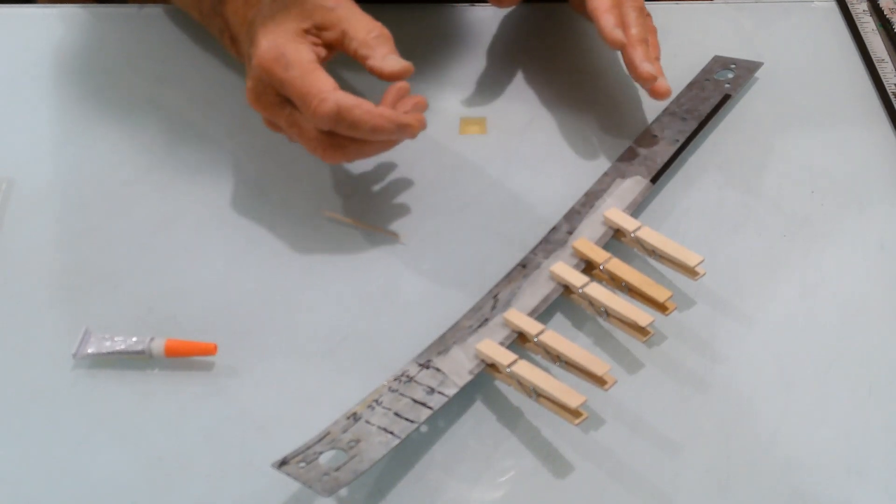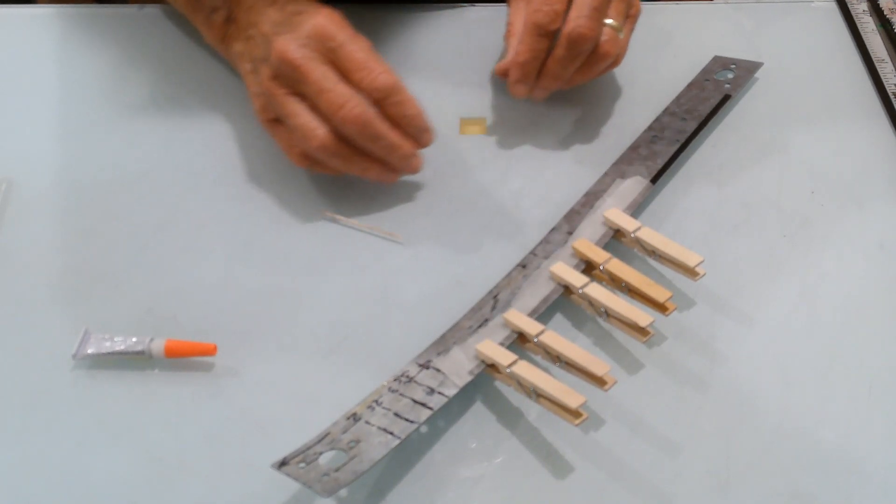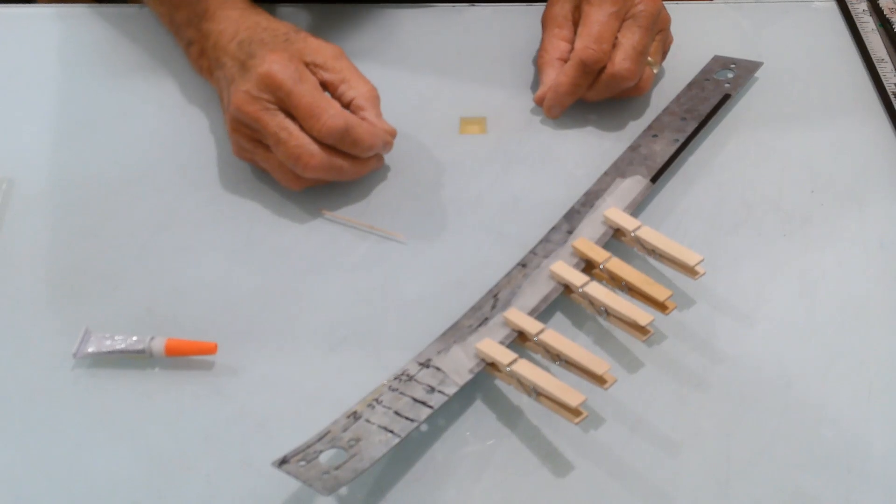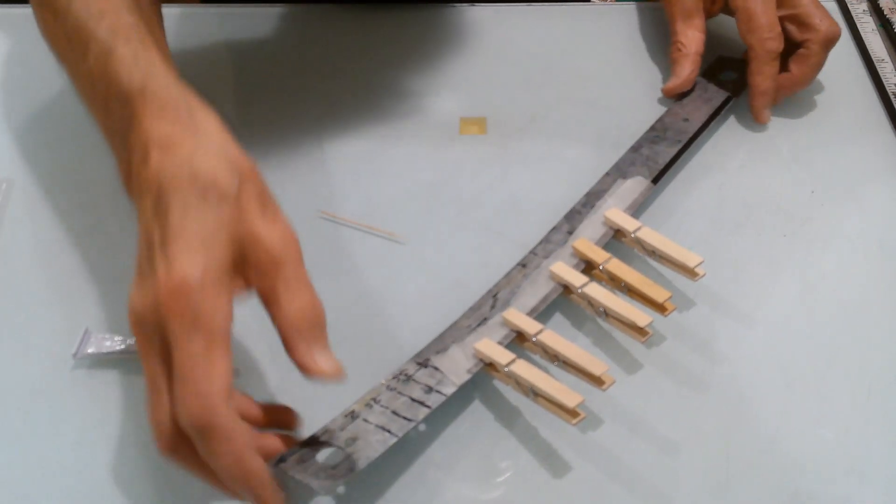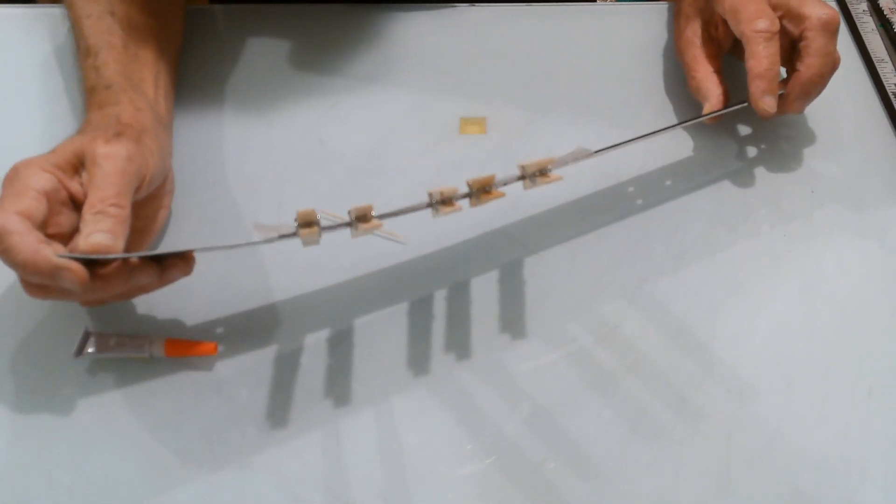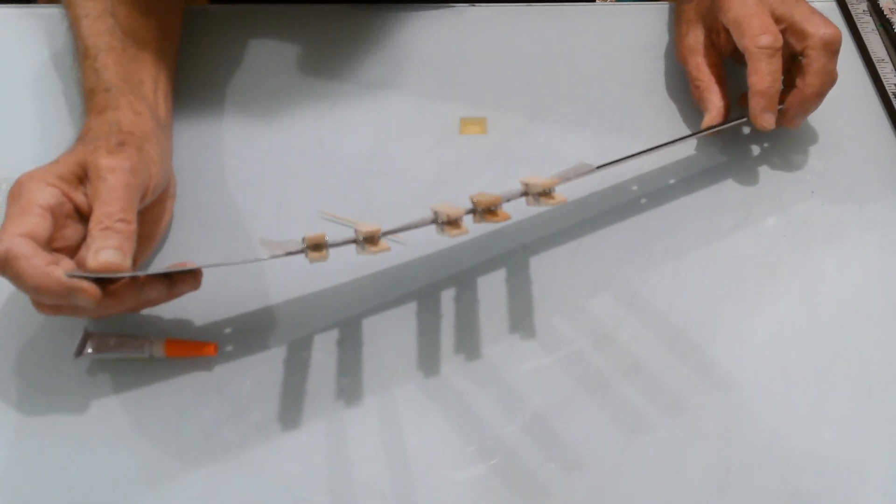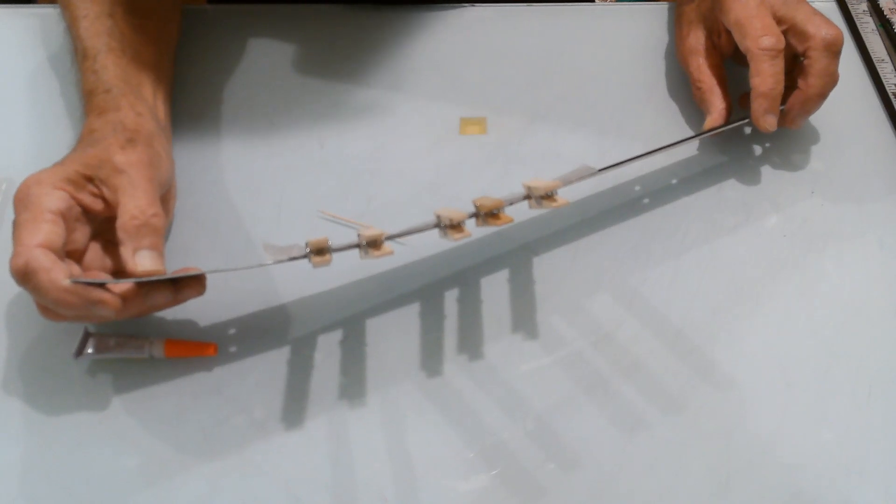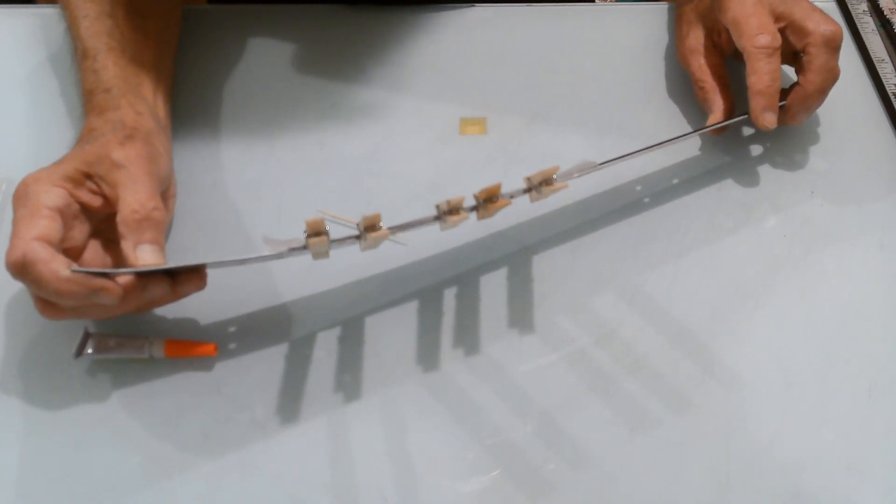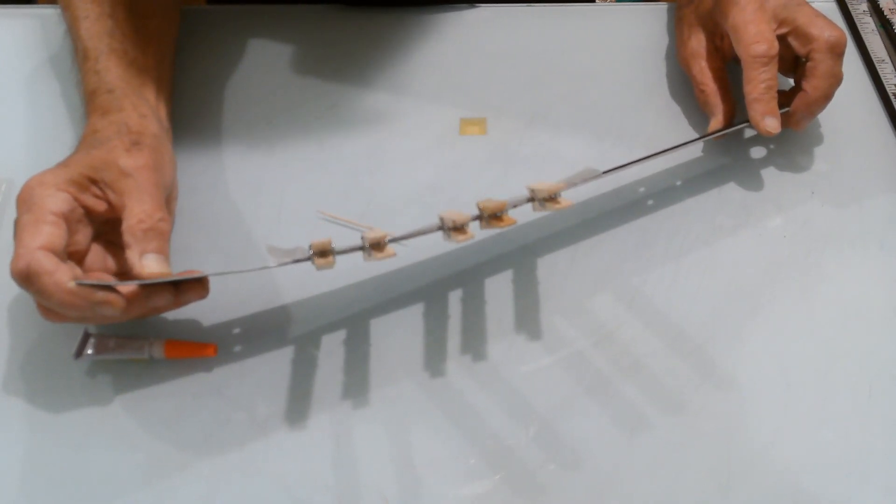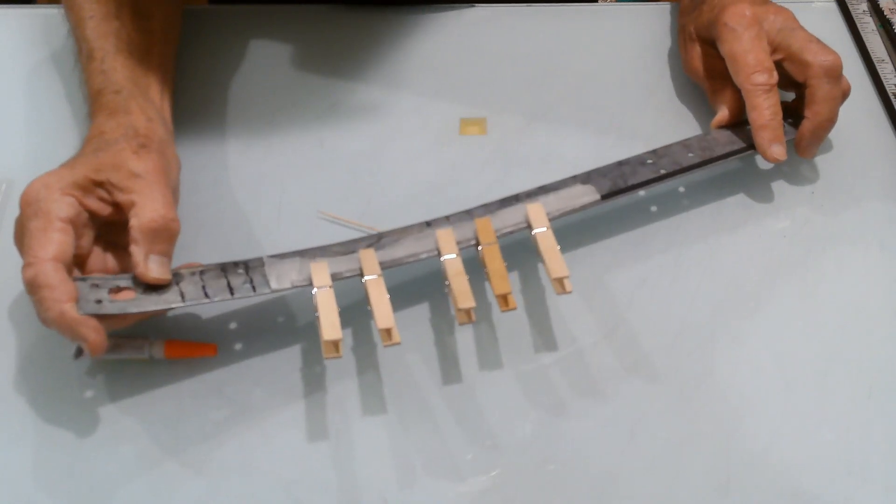It won't have that shape when I release the clamps. The carbon fiber will have a tendency to go a little bit back to its flat position. So you'll end up with less of a bend than what you have as a bend in your form, whatever you use for the form.